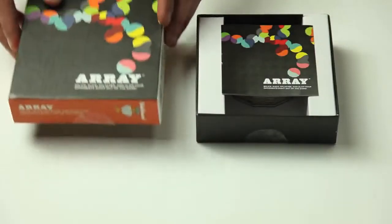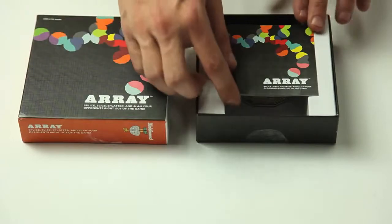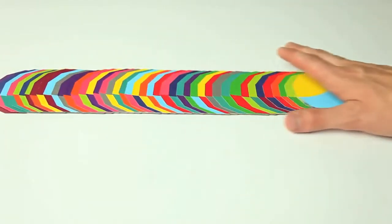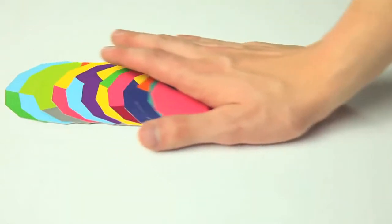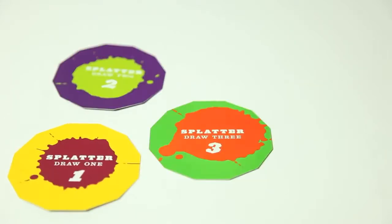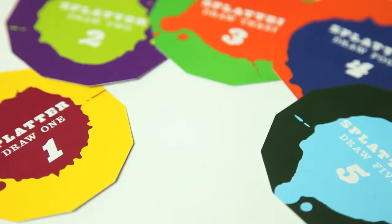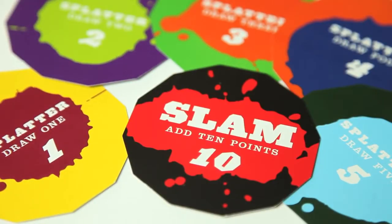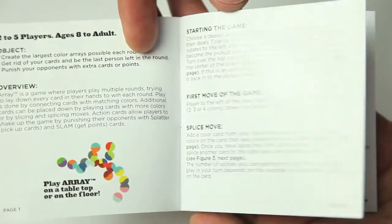Here's what's in the box. Seventy Array cards that have either two colors, three colors, or four colors. We have 12 action cards including splatter cards and a slam card. And we also have full-color illustrated rules.